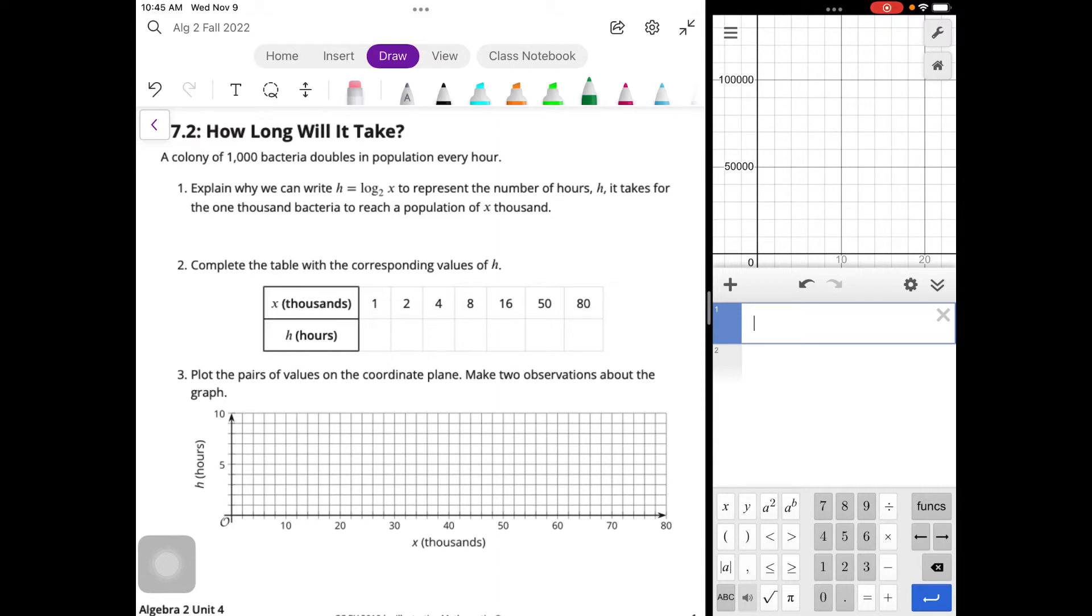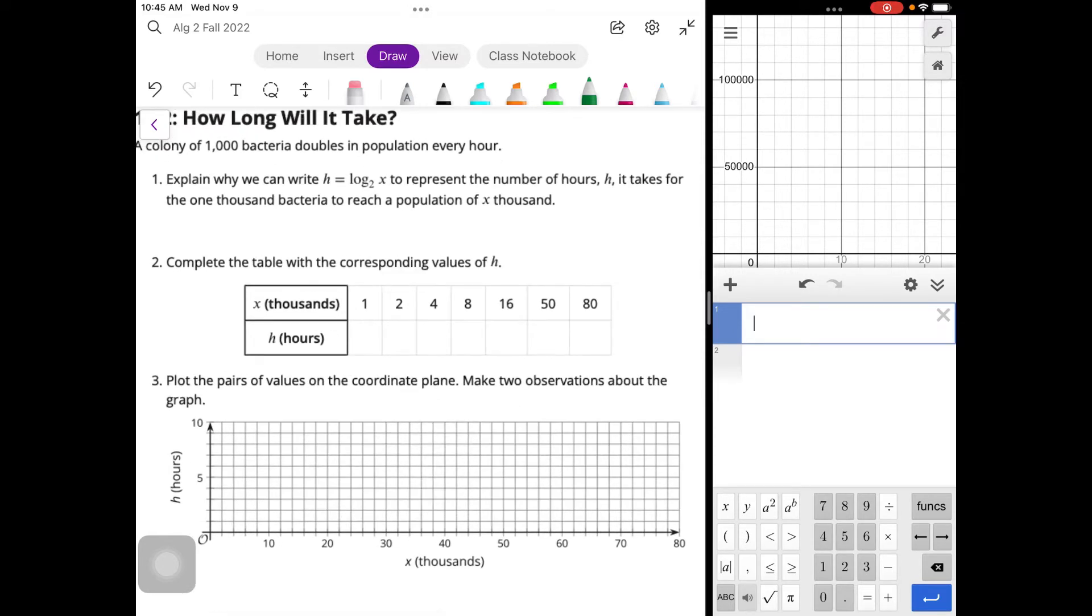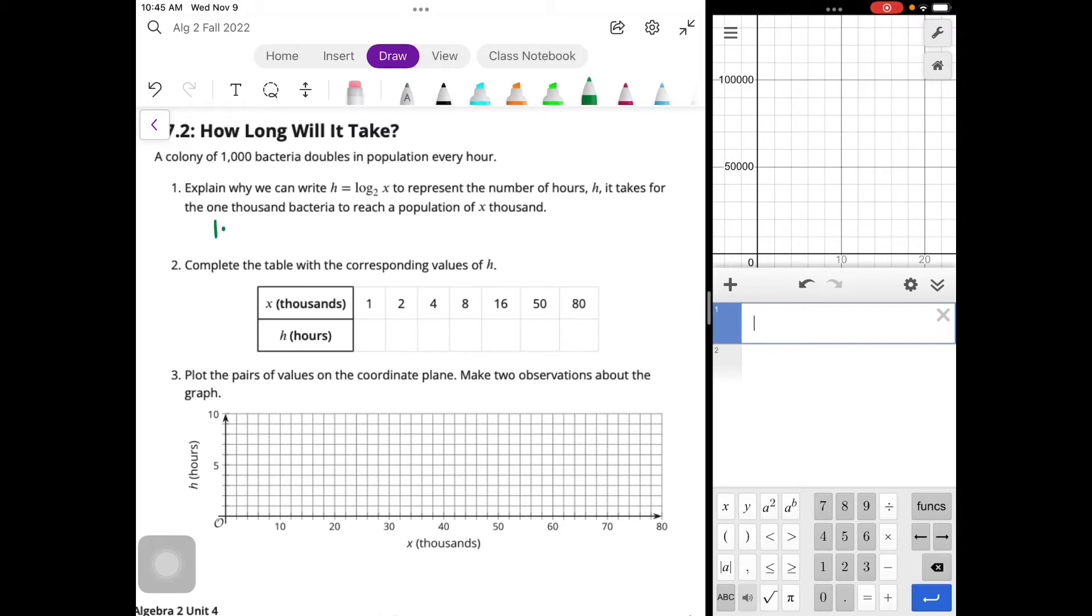So remember, if we are writing our function, we know that our initial value is X thousand, so it's 1,000. So our initial value is 1. And then we are doubling. So that's times 2 to the H, right? X is the number of 1,000. So X equals 1 times 2 to the H. And if we were to write that in logarithmic form, log base 2 of X equals H. So that's the same thing that we had in the original problem.